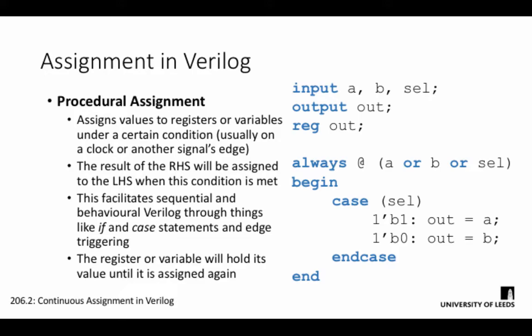Procedural assignment assigns values to registers or variables only under specified conditions, usually on the edge of a clock or another signal. It doesn't matter how much the right-hand side changes. The left-hand side only updates when the conditional signal triggers, latching in the new result. The register or variable will then hold this value until it's assigned again. This facilitates sequential and behavioral Verilog through things like if and case statements, which we'll look at in the final lab session of this course.